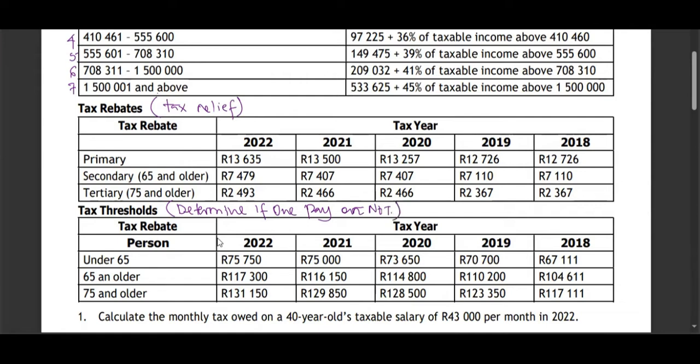That's what we use these values for. For example, the person under 65 years of age — they have to earn this as their annual taxable income to start paying tax. They have to earn more than this. Should they earn this or below, that means they don't pay tax. Rebates are subtracted from the tax payable according to the age.